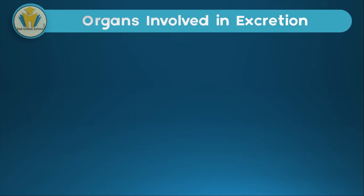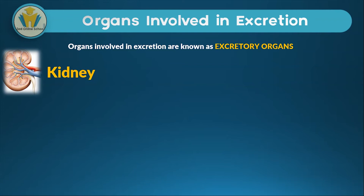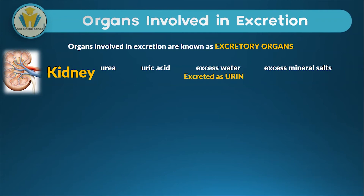Now let's look at the organs involved in excretion. Not all organs in the body are involved — we're going to look at the major ones, which we call excretory organs. There are basically four. The first is the kidney; there are usually two in the human body. The kidneys excrete urea, uric acid, excess water, and excess mineral salts, and when combined these are excreted as urine.